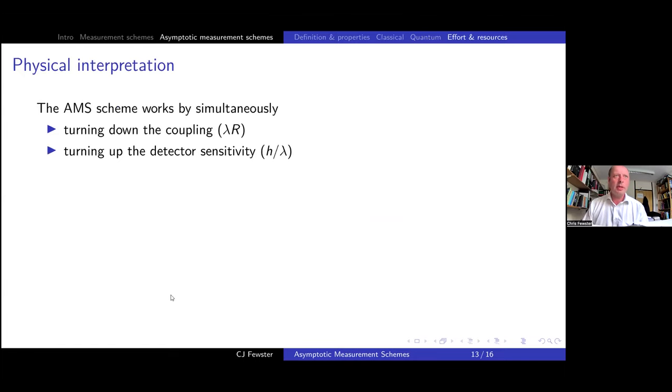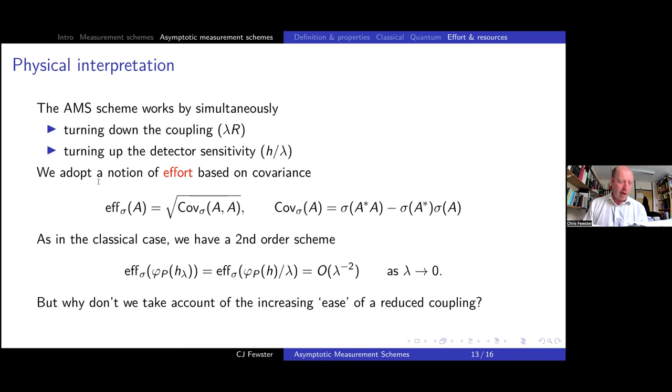So I'm coming to the last topic in this, which is the physical interpretation of our scheme. It's interesting that we simultaneously turn down the coupling because lambda is going to zero and we turn up, if you like, the detector sensitivity because our test function is getting bigger. So we're asking, if you like, for a bigger observable to be measured. Our notion of effort for the quantum case is going to be based on the covariance measure. This is a convenient way of measuring the size of an element in the algebra. And if you use this method, then you can see that what I've described is a second order scheme. So the effort is scaling like one over lambda squared as lambda is going to zero.